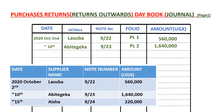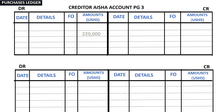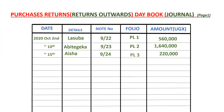The third transaction: on the 15th, supplier Aisha — we returned goods worth 220,000 back to her, note number 9/24. We go to the purchases ledger, creditor Aisha's account, and debit it with 220,000. The other item affected is returns outwards in the returns outwards day book on page one. Creditor Aisha's account is on page three, so we reference PL3 in the folio column.